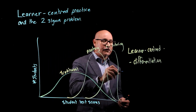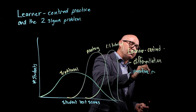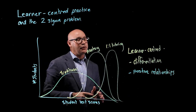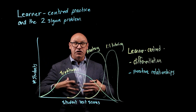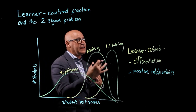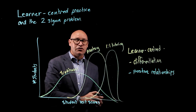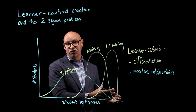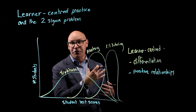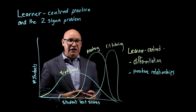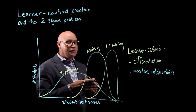Another important learner-centered practice is about building positive relationships with students. Much like Bloom found that one-on-one tutoring gave the tutor an opportunity to provide encouragement and individualized feedback, flipped learning provides the teacher an opportunity to spend more time with each student every single day. That provides an opportunity to build relationships, rapport, and deliver timely and really specific feedback.